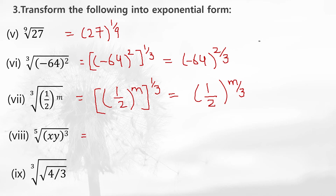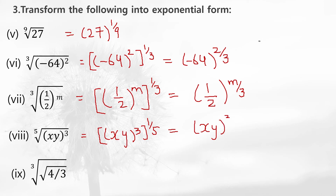The next one has a 5th root. The radicand as usual is written as it is: xy to the power 3. The 5th root is written as 1 by 5. Multiplying the powers gives xy to the power 3 by 5.